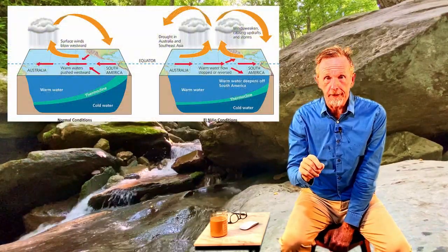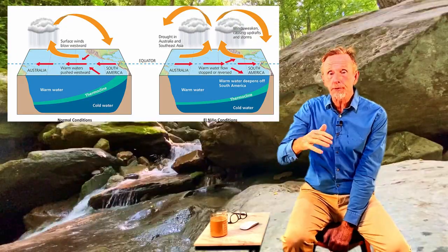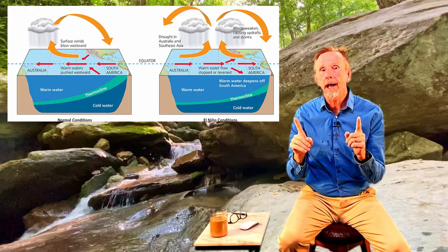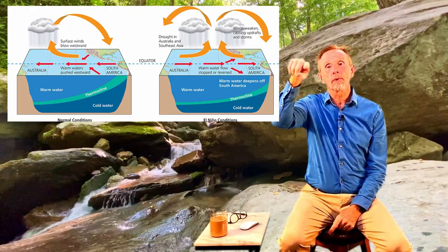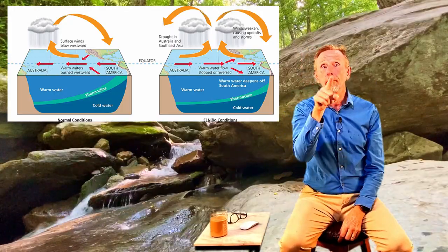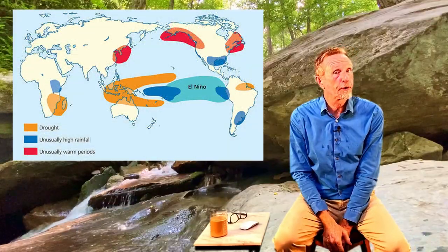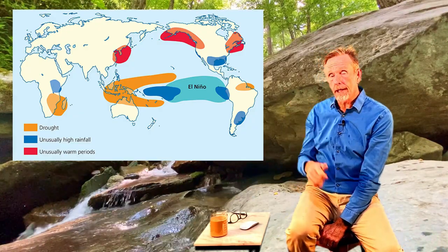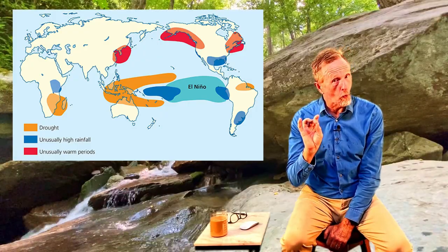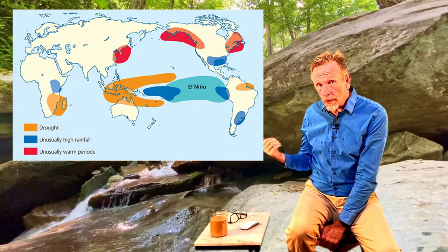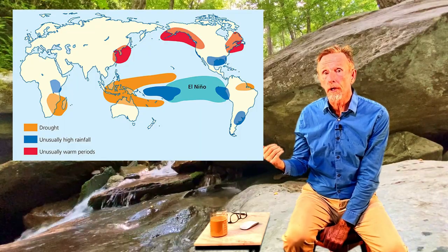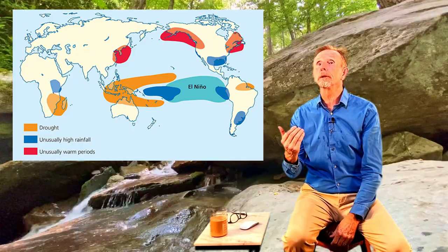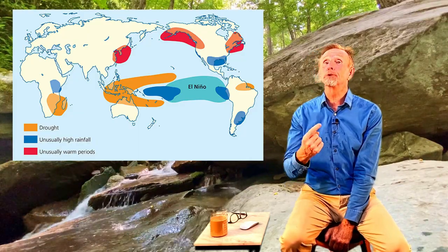The thing to remember about El Niño: it's a warming phase. The Pacific Ocean is warmer than usual, the thermocline gets deeper, and the wind patterns shift. Instead of one big circulation pattern, you get two smaller ones. This affects about two-thirds of the earth when it occurs. In America during an El Niño, the Pacific Northwest gets more moisture and is warmer than usual. For us in Florida, we get cooler and drier weather, and Australia experiences droughts.